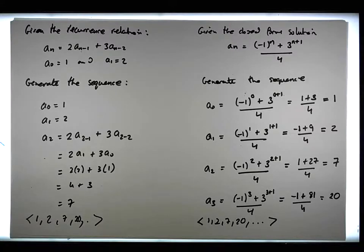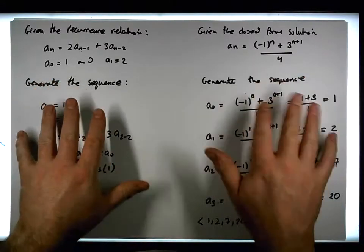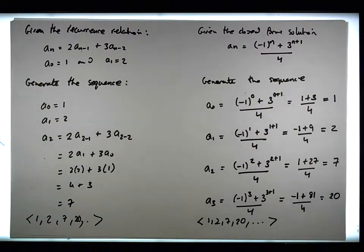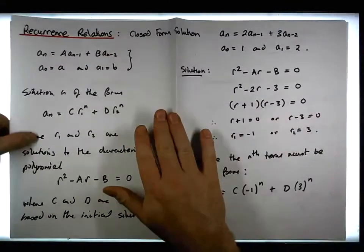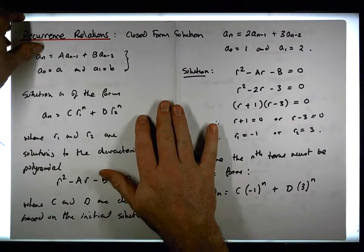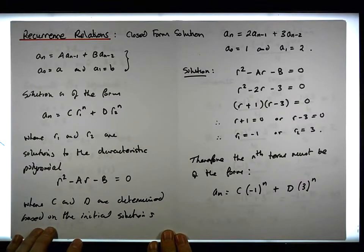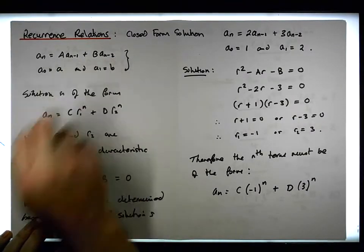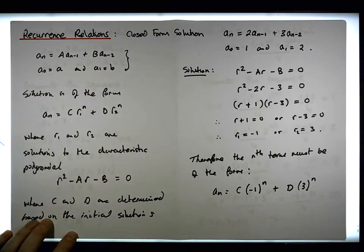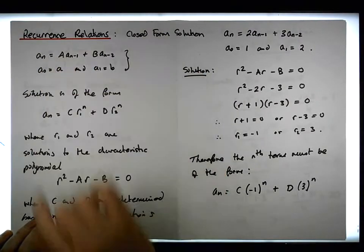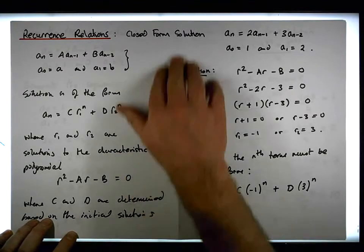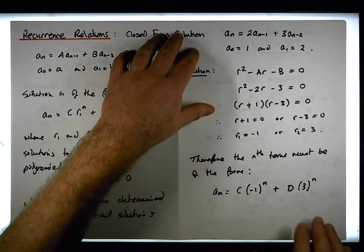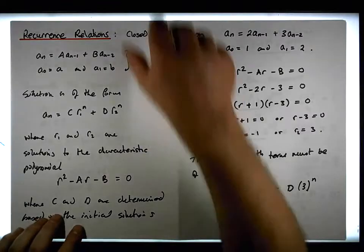In this video we did two things: we found the closed form solution from the recurrence, and we showed that the first few terms rationalize to generate the same sequence. This is Jonathan Lambert with Maths and Stats. I hope this video dealing with a degree-two homogeneous linear recurrence relation was intuitive and helpful. Thanks for watching.